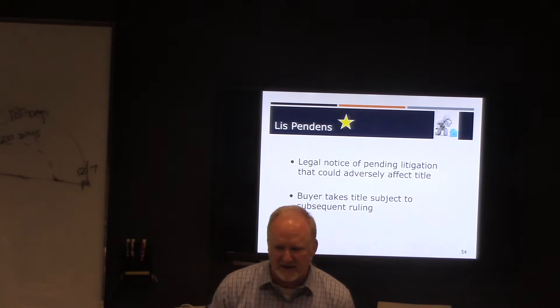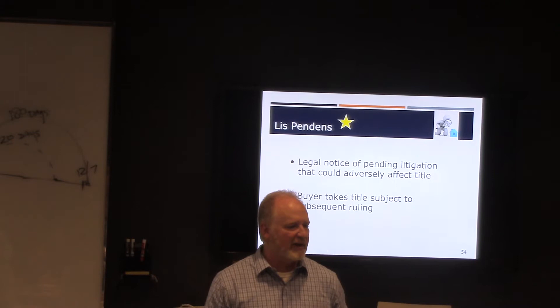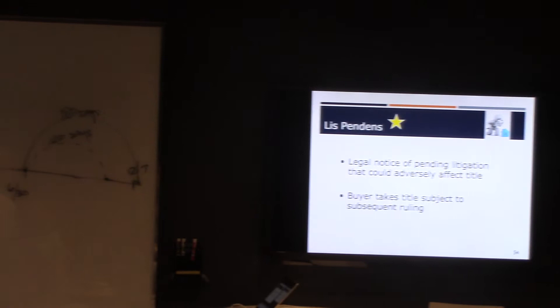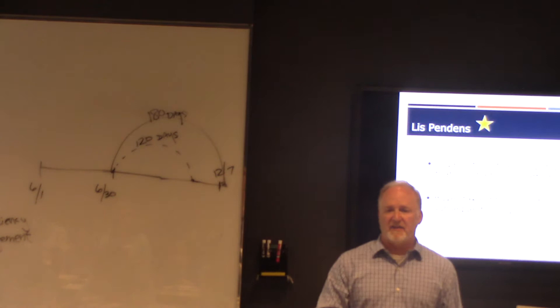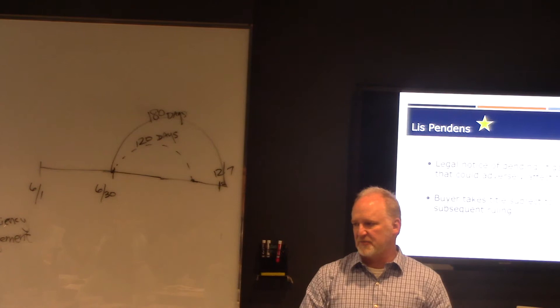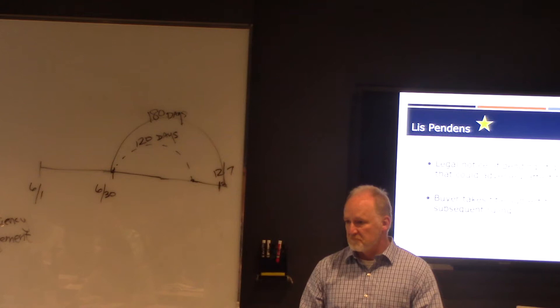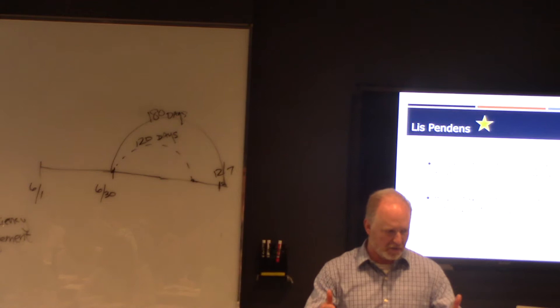What it really stands for is a notice of pending litigation. A lis pendens is just simply a notice of pending litigation. There has been a lawsuit filed against this property. And if you have any interest in buying this property, you need to know. So, the minute that the lawsuit was filed, the attorney filing the lawsuit also filed a lis pendens. That way, anybody looking at this property knows that there's been a lawsuit filed against it.